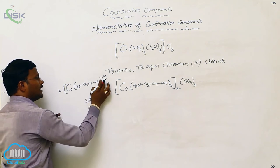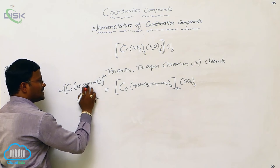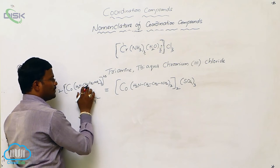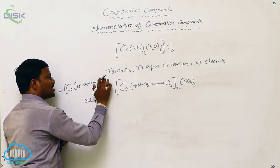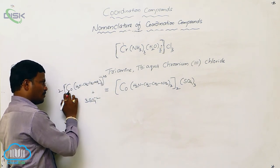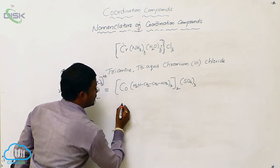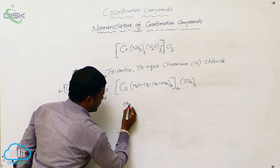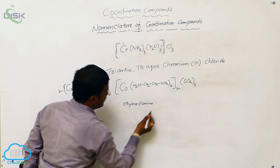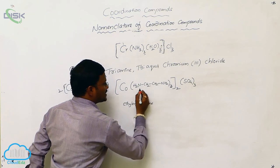Therefore, the coordination sphere carries a positive charge. Ethylenediamine is a neutral ligand, meaning a neutral molecule, so whatever charge is present in the coordination sphere belongs to cobalt — the oxidation state of cobalt is +3. The name of the ligand is ethylenediamine, also called ethanediamine, and there are three of them present.